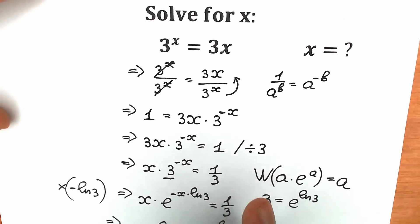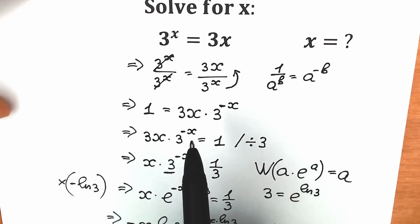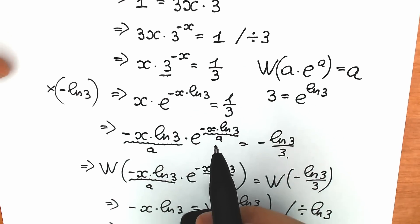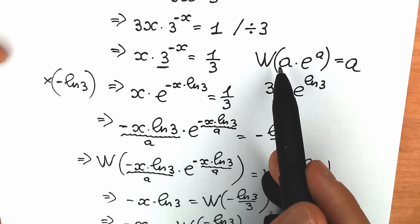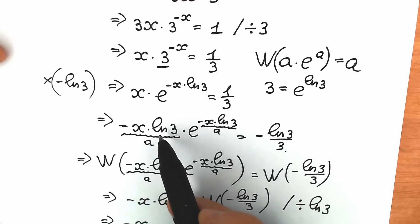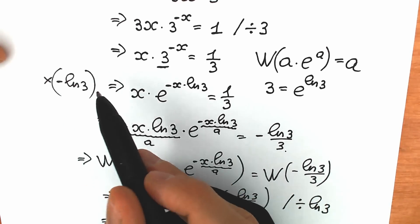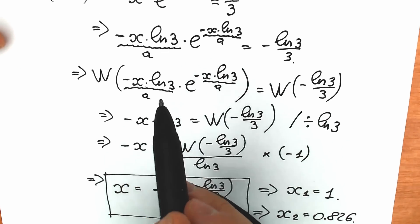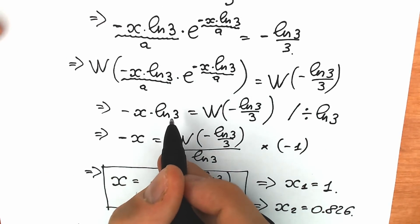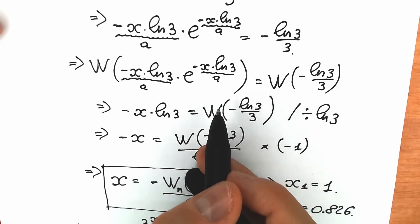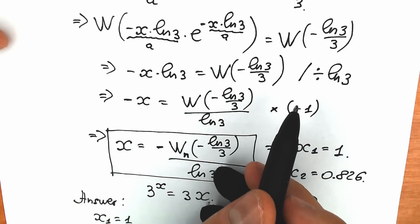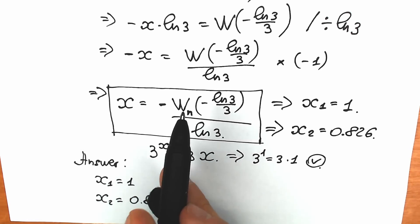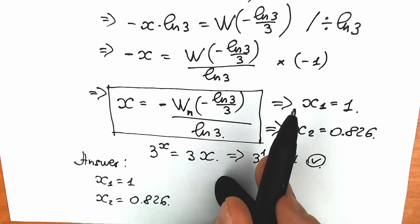Let's recap the solution. First, we divided both sides by 3 to the power x. Second, we grouped constants on the right and variables on the left. Then we created the Lambert W expression: we multiplied both sides by minus natural log 3 and replaced 3 with e to the power natural log 3. Applying Lambert W gave us minus x times natural log 3, and then two more steps — multiplying by minus 1 and dividing by natural log 3 — gave us our answer. The Lambert W function has many branches, so we have two solutions: x₁ and x₂.